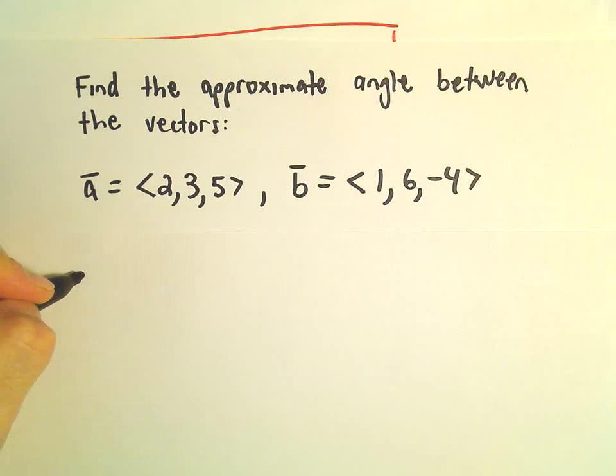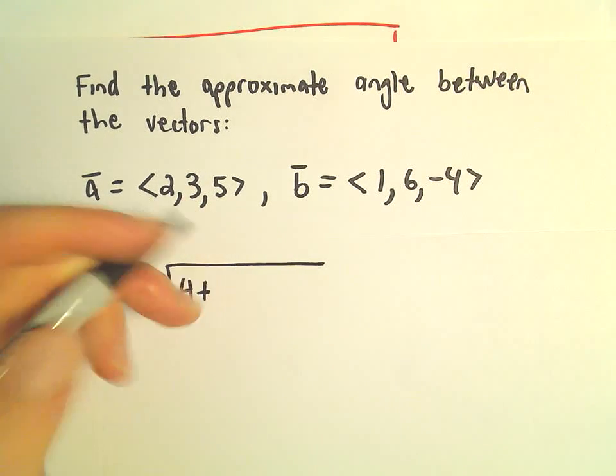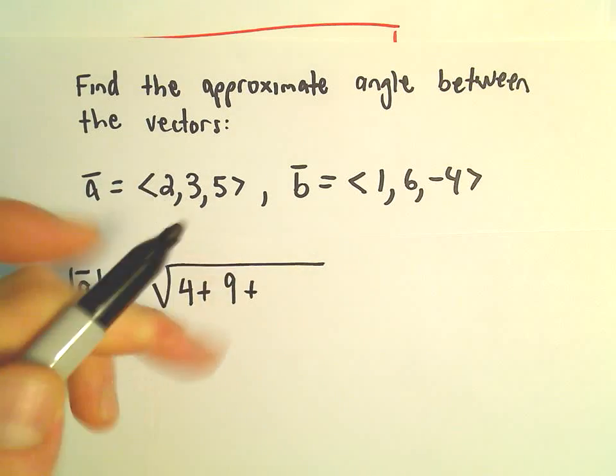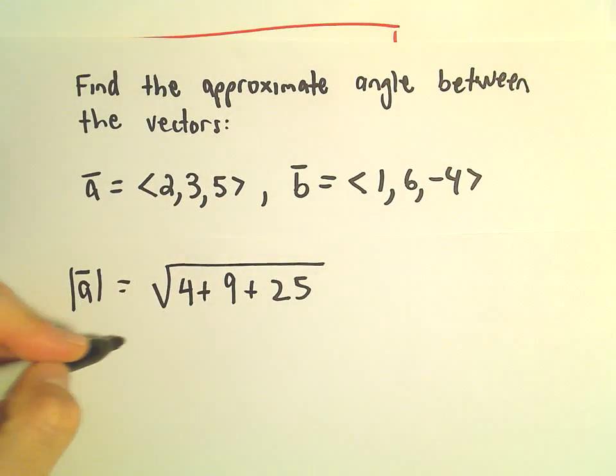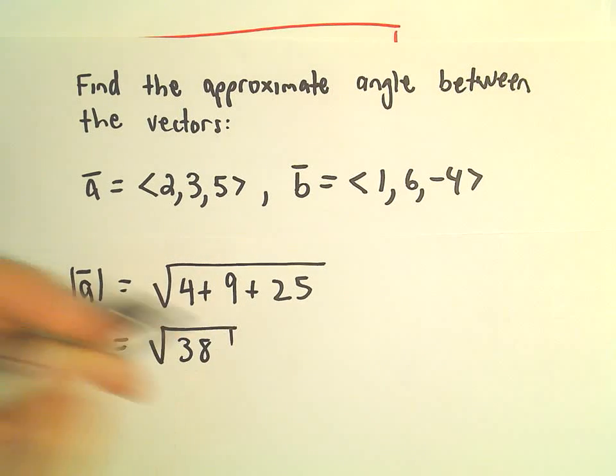The first thing I'm going to do is find the magnitudes of the vectors. So we'll get 2 squared, which is 4, 3 squared, which is 9, 5 squared, which is 25. That's going to be 13 plus 25, which is going to give us 38.